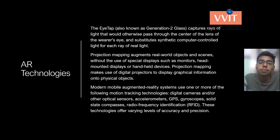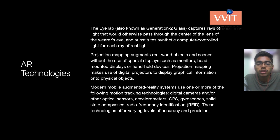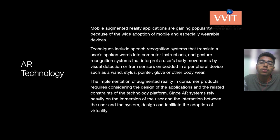Some more AR technologies include the eye-tap, which captures rays of light that would otherwise pass through the center of the wearer's eye and substitutes synthetic computer-controlled light for each ray. Projection mapping augments real-world objects and scenes without special displays, using digital projectors to display graphical information onto physical objects. Modern mobile AR systems use motion tracking technologies like digital cameras, optical sensors, accelerometers, GPS, gyroscopes, all-state compasses, and RFID. Due to mobile augmented reality applications, AR technology has gained more popularity because of the wide adoption of mobile and wearable devices.